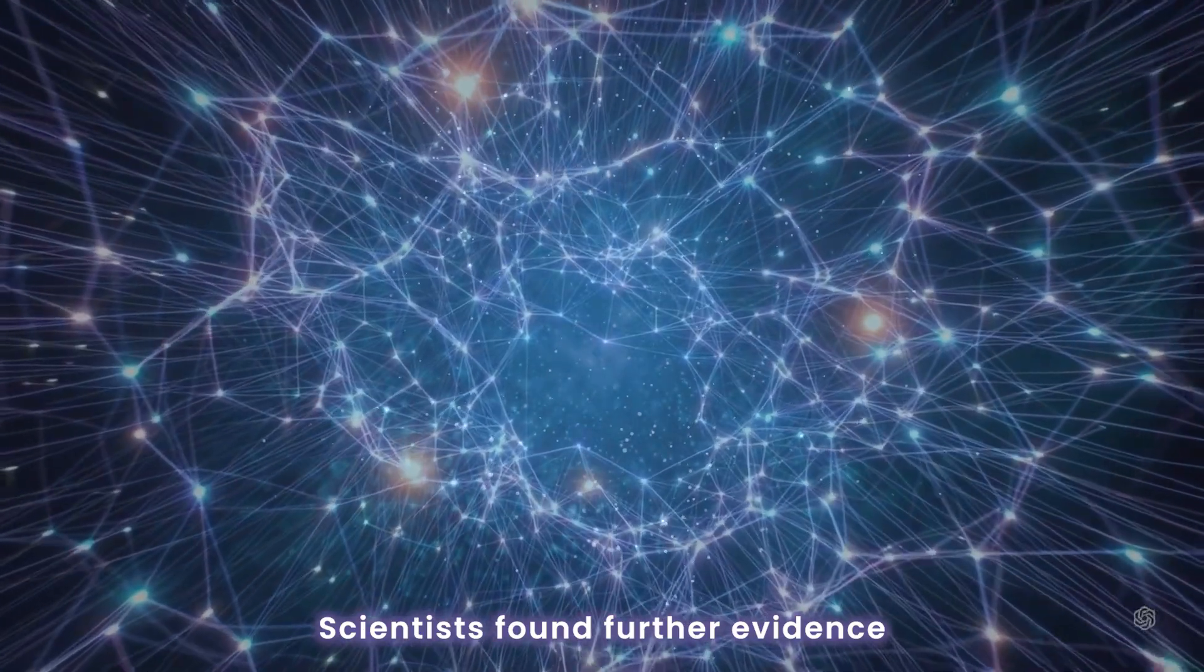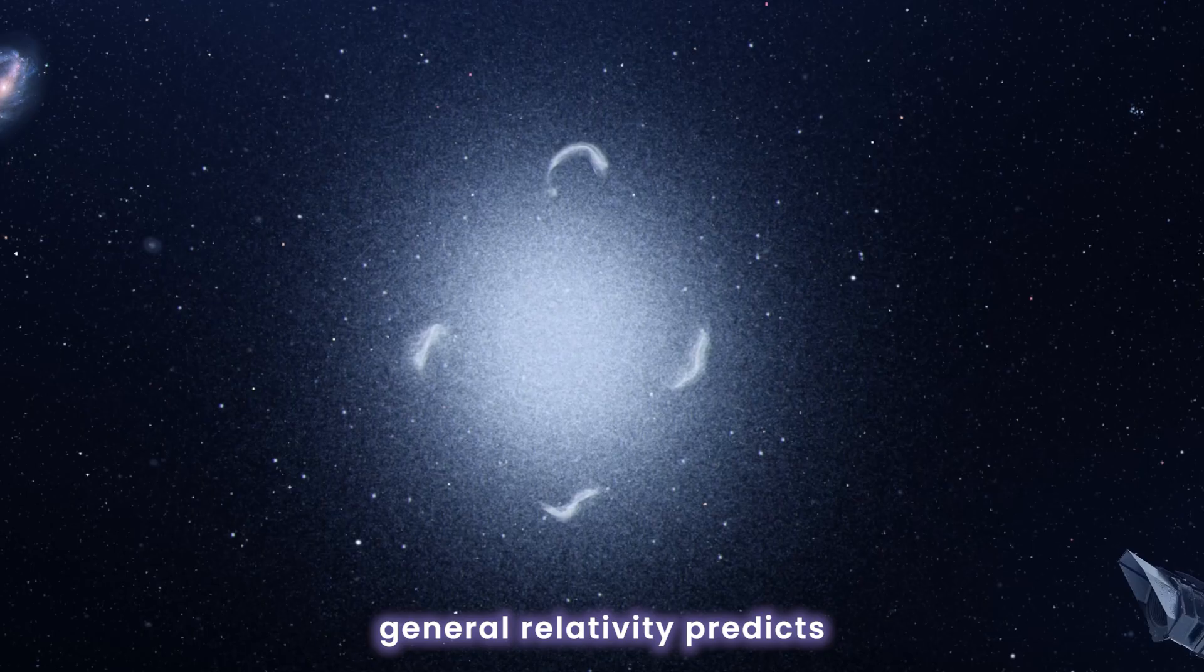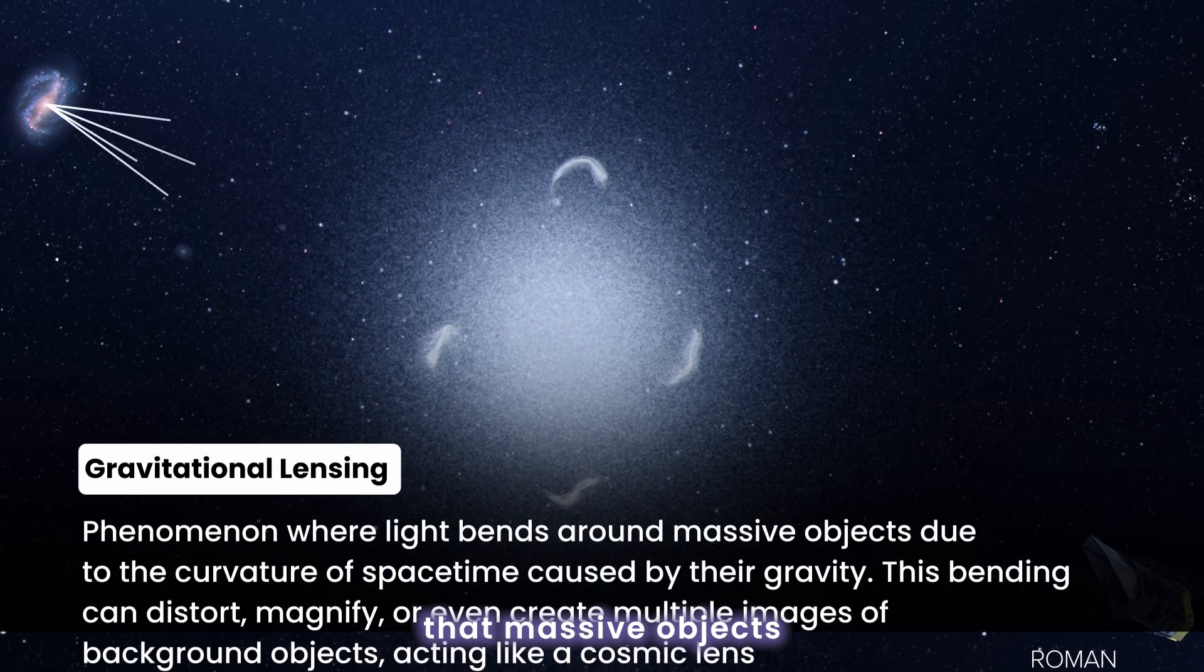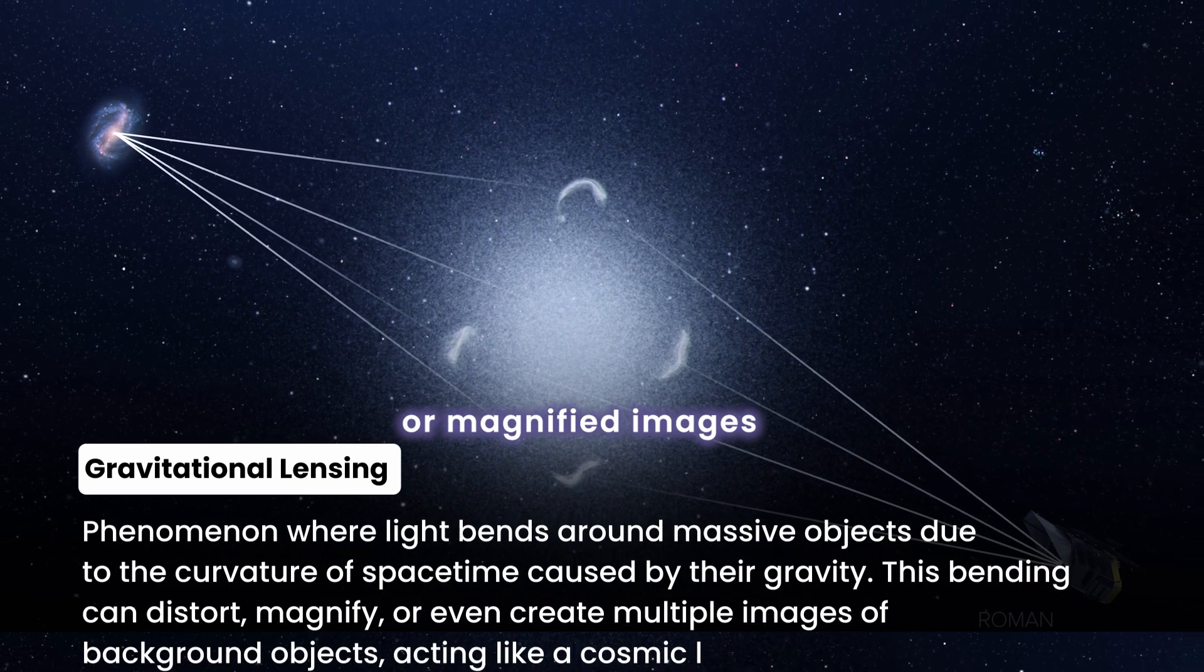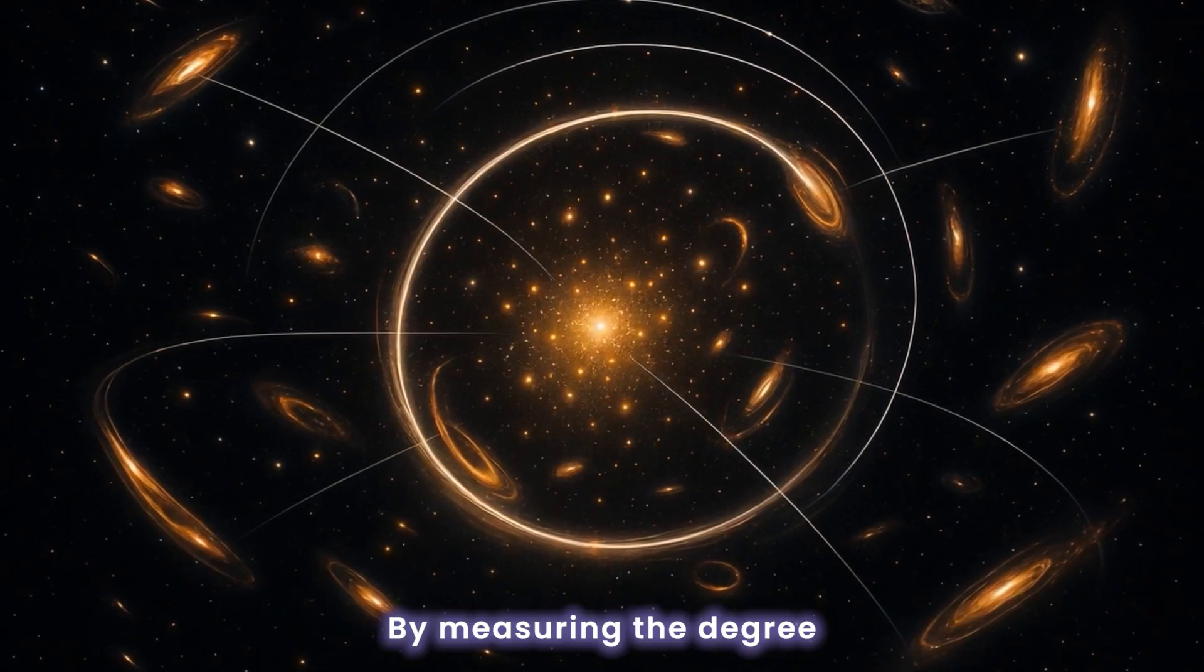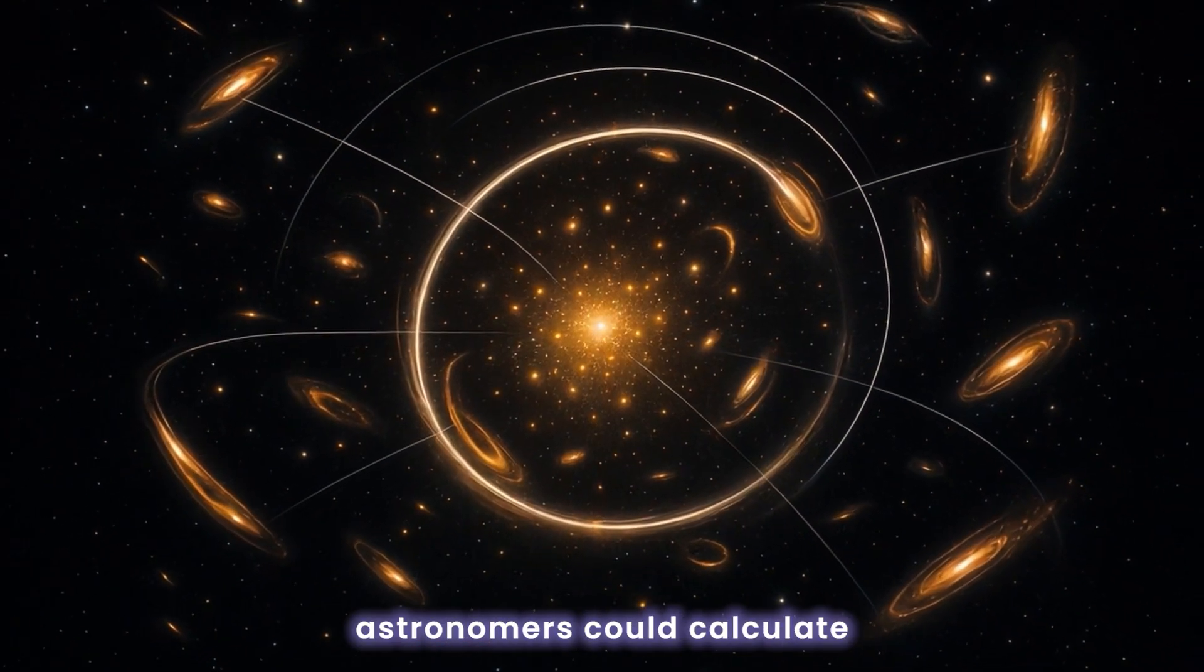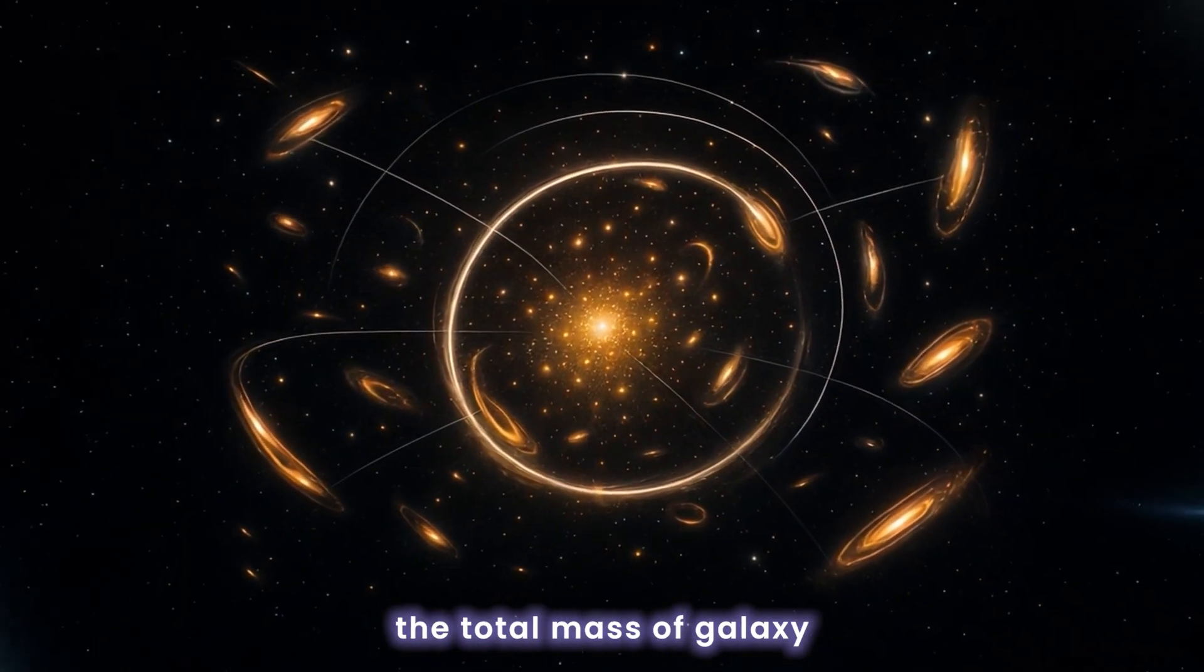Scientists found further evidence through gravitational lensing. Einstein's general relativity predicts that massive objects bend the path of light, creating distorted or magnified images of background galaxies. By measuring the degree of this bending, astronomers could calculate the total mass of galaxy clusters.